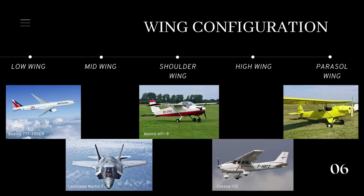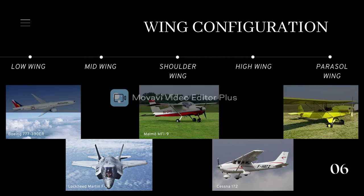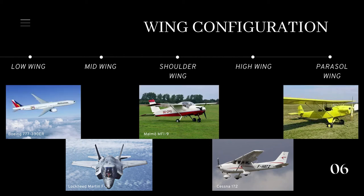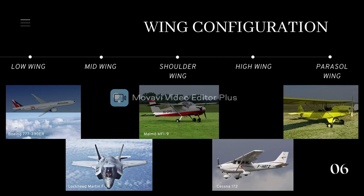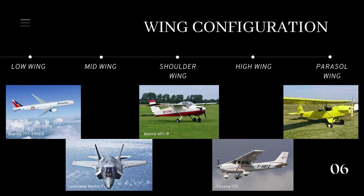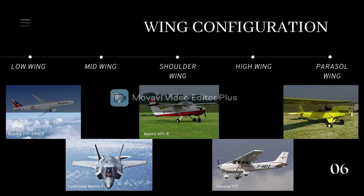There are five wing configurations. Low wing: mounted near or below the bottom of the fuselage. Mid wing: mounted approximately halfway up the fuselage. Shoulder wing: mounted on the upper part or shoulder of the fuselage, slightly below the top — sometimes considered a subtype of high wing. High wing: mounted on the upper part of the fuselage, applying to a wing mounted on a projection above the top of the main fuselage. Parasol wing: raised clear above the top of the fuselage, typically by cabin struts or pylons.